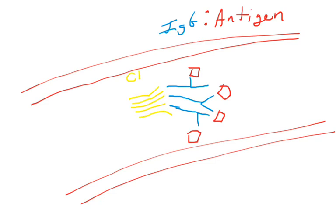This goes back to the classical pathway of complement activation. The C1 molecule — that large complex made of C1Q, C1R, and C1S — is also in your bloodstream. C1, as we learned, binds IgG. So if IgG is stuck to the surface of a pathogen, or to pieces of that pathogen, or any antigens that pathogen released into your bloodstream, the C1Q part of C1 will bind the IgG. That will eventually lead to the formation of the classical C3 convertase, which means we will decorate the pathogen or pieces of the pathogen with C3B.